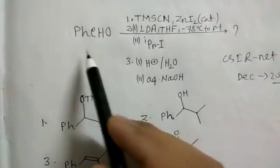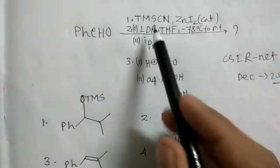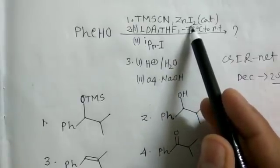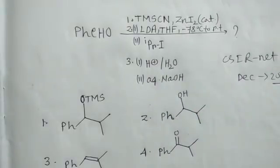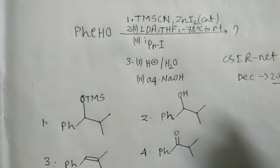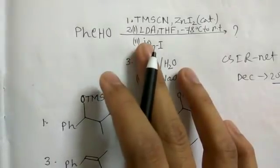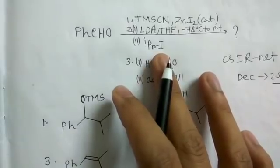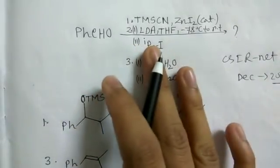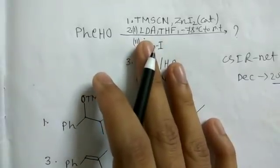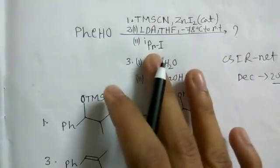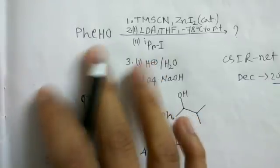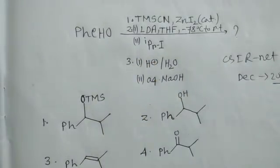Looking at the reaction conditions: first, TMSCN (trimethylsilyl cyanide) is given along with zinc iodide, which acts as a Lewis acid. In the second condition, LDA is given along with isopropyl iodide. We can guess that LDA will act as a base, and isopropyl iodide will act as an alkylating agent — so alkylation of benzaldehyde will occur, followed by hydrolysis.